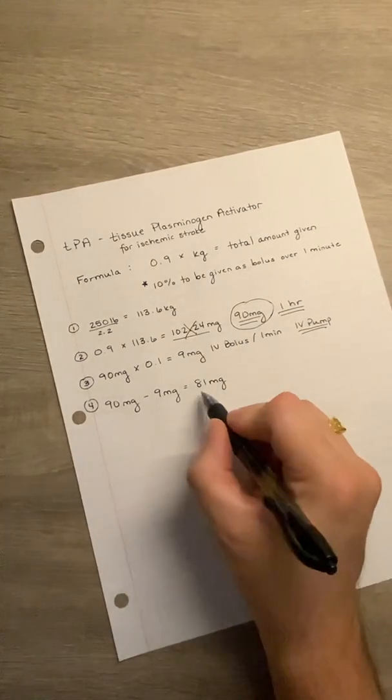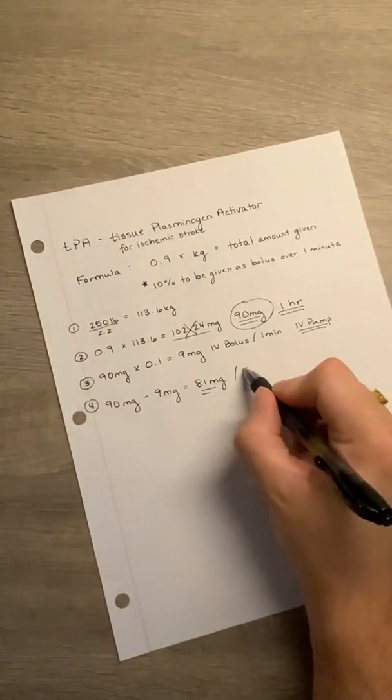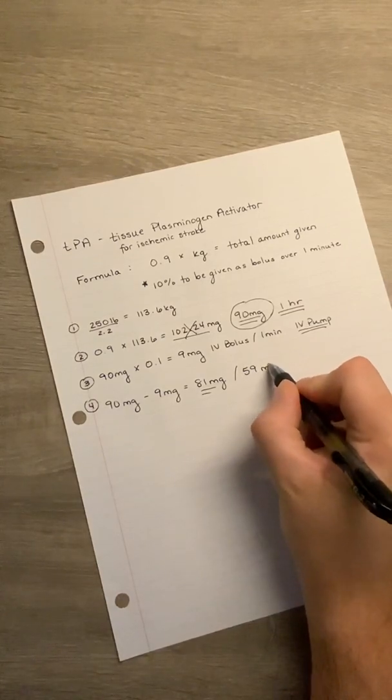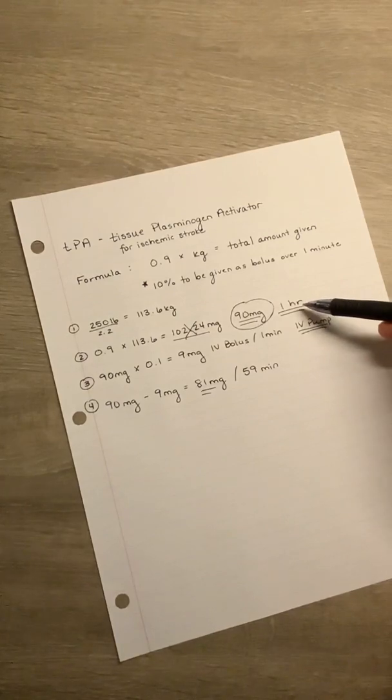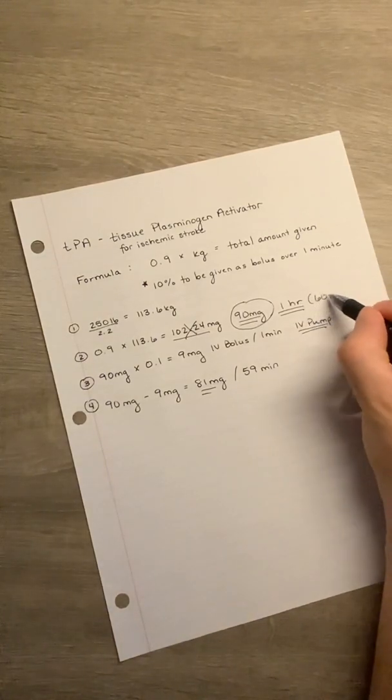This amount that's remaining must be given over 59 minutes. Because remember, we already gave one minute here, and the total amount of time is one hour, which is also 60 minutes.